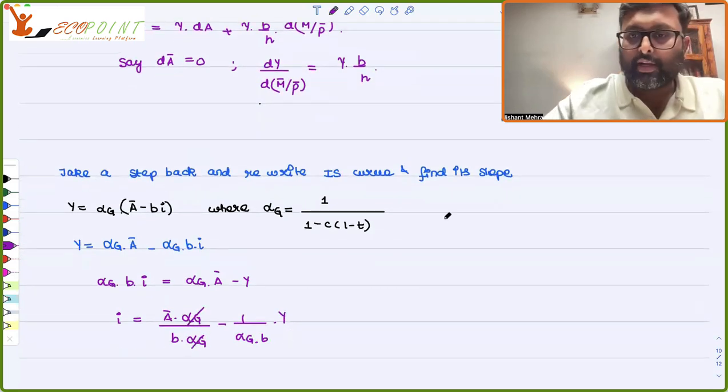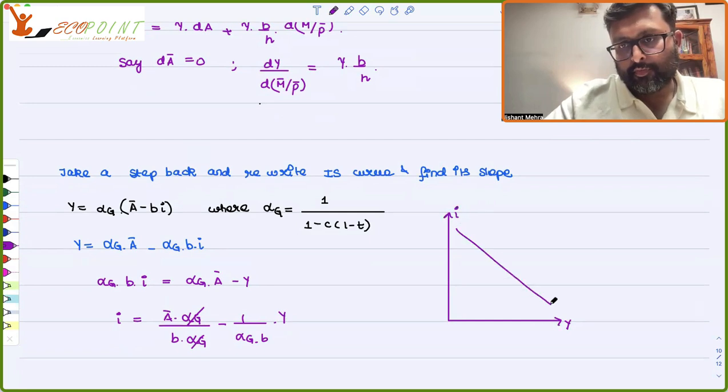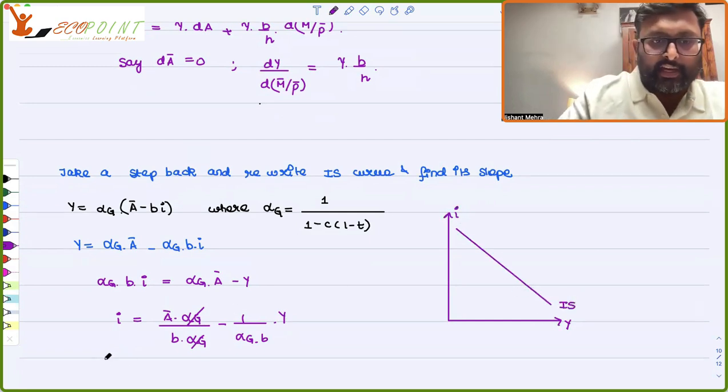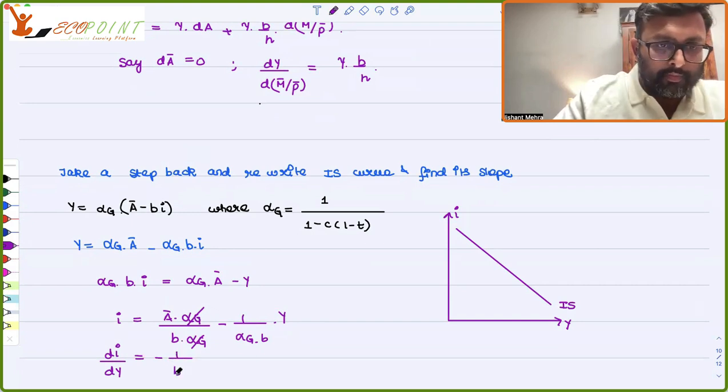So since you know that IS curve is drawn in Y I space, the slope of the IS curve is DI by DY is minus 1 upon B alpha G.